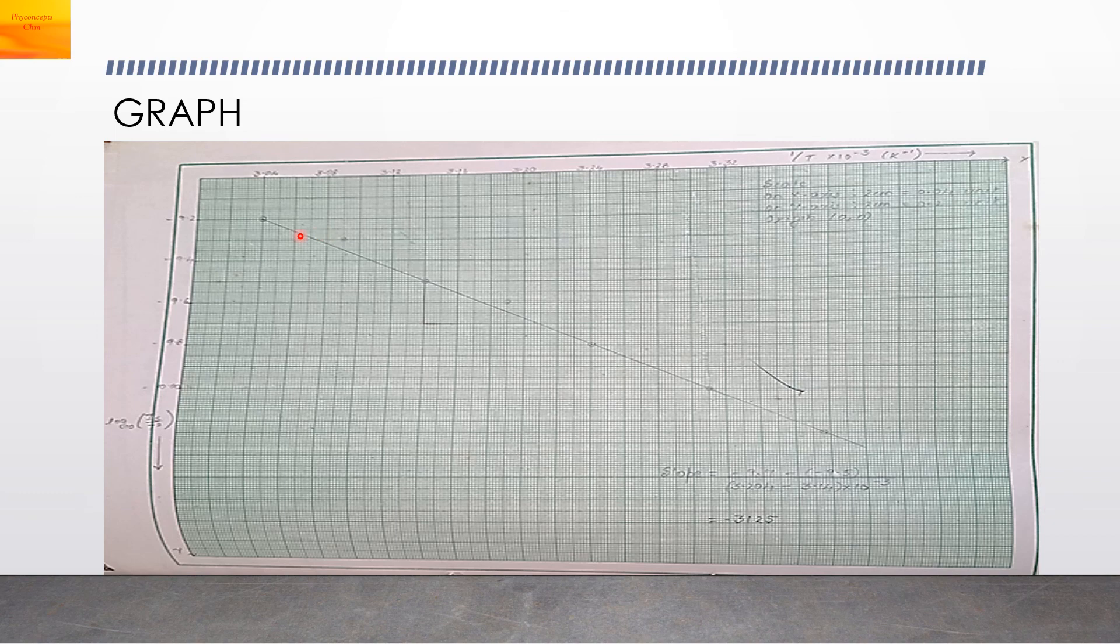As you are getting negative values, you will get a straight line in the fourth quadrant. This is log of IS upon T square on the y-axis and 1 by T on the x-axis. We get the slope about minus 3125.